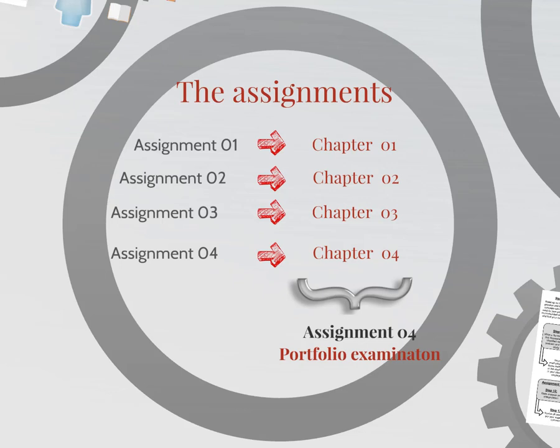For your module mark, each assignment and the portfolio contributes — the portfolio is 60% and the assignments are 40% of your module mark. This shows you that everything you do in this module is important. Do not underestimate any of it. You also have to score at least 30% as a year mark in order to gain access to the examination for COM4809. If you miss handing in an assignment, get 0% for one due to Turnitin submission issues, or simply do not do what was required, you could realistically score below 30% and not be allowed to submit your portfolio as your examination. In that case, we cannot grant concession — you will, at that point, already fail the module.